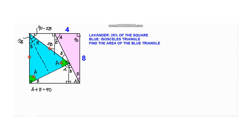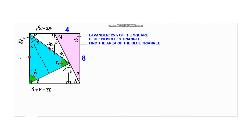To find the area, the thing to do is find the base of this isosceles triangle and the height. It is one-half times the base times the height that gives the area of the isosceles triangle. To find h, h equals the base times cosine of B.